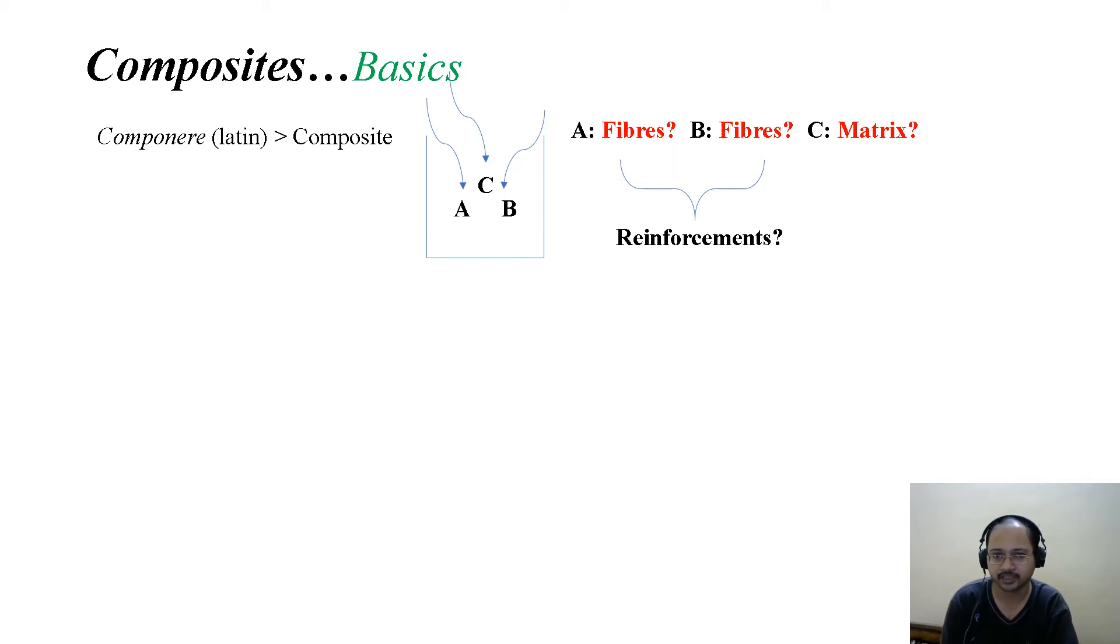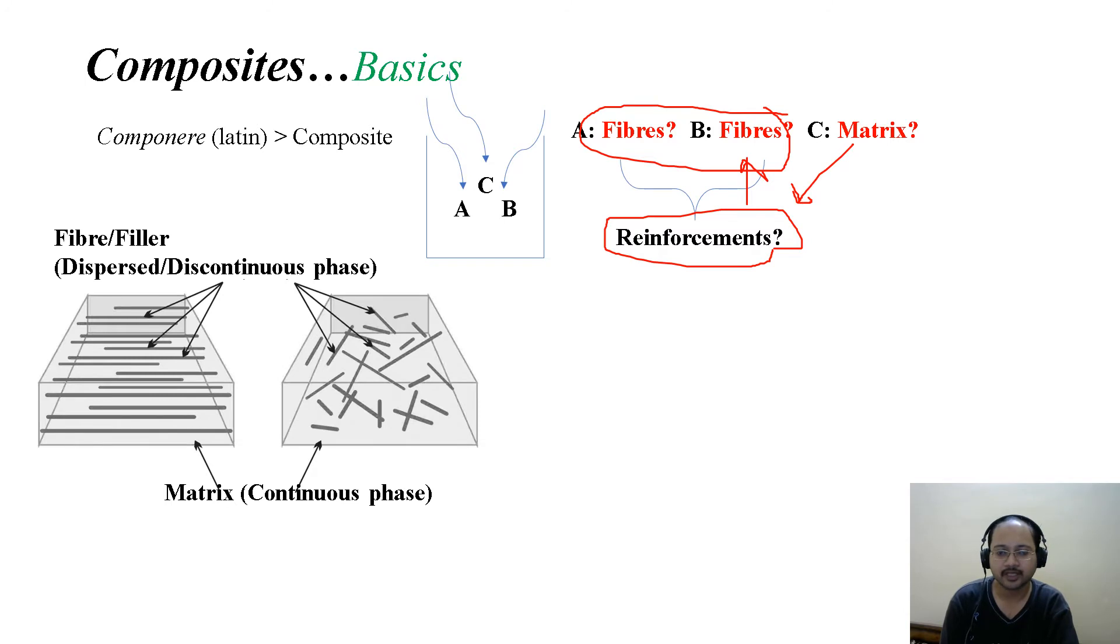Here we can see this container with materials A, B, C. A can be fibers, B can be fibers, or C can be a matrix. When we say fiber, this is essentially what we use the word reinforcement for—that means the matrix is reinforced using the fibers. Now, how can the fibers be reinforced?